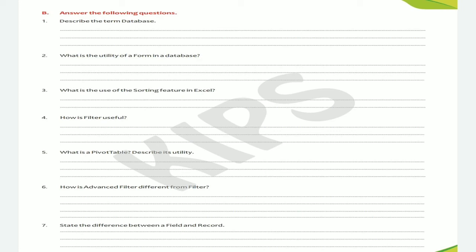Third: what is the use of the sorting feature in Excel? Sorting is a very useful feature that helps the user to arrange the data either in ascending order or descending order. Fourth: how is filter useful? The filter feature helps the user to display only those records that meet the specified criteria and hide the rest of the records.